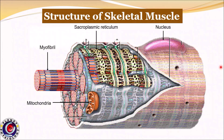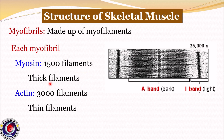Its cell membrane is called sarcolemma and cytoplasm is called sarcoplasm. Muscle fiber contains all the other cell organelles like nucleus, mitochondria, and sarcoplasmic reticulum, which is the endoplasmic reticulum in the muscle. But all these organelles are present in the peripheral parts. The major part of the cell is made up of many smaller fibers called myofibrils, and each myofibril in turn is made up of further smaller fibers called myofilaments, namely actin and myosin filaments.